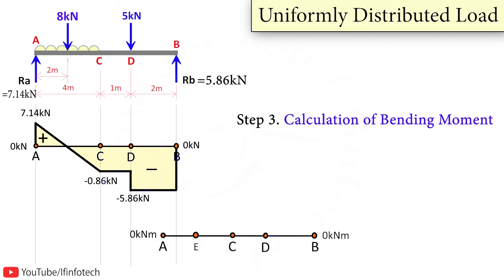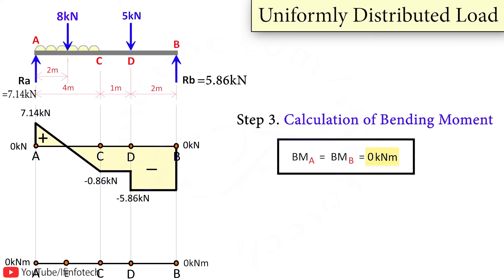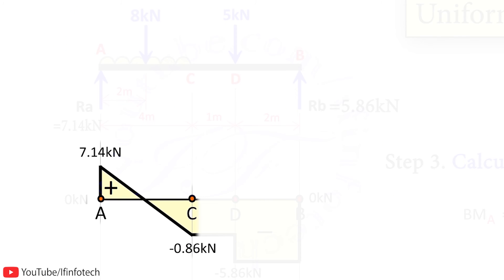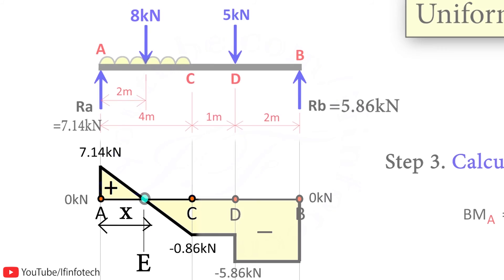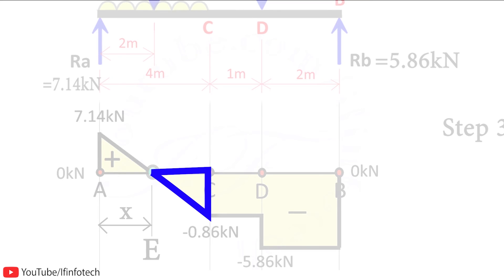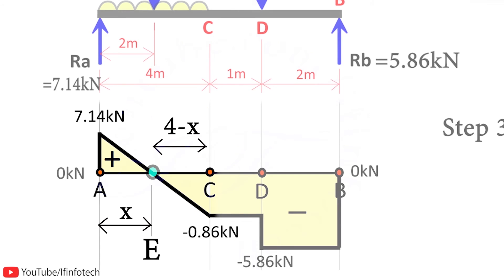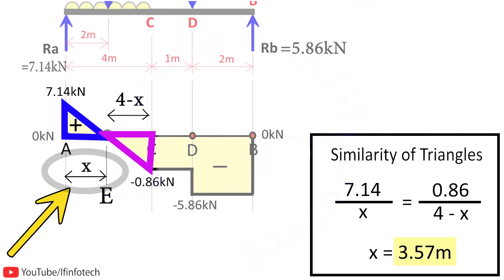The next step is calculation of bending moment. For a simply supported beam, the bending moment at the ends is 0, so bending moment at point A and point B is 0. Where shear force changes from positive to negative, the bending moment is maximum — I represent this point as E. To find the location of point E, distance AC is 4 meters. Using similarity of triangles: height of first triangle is 7.14 with base x, and height of second triangle is 0.86 with base 4 minus x. Solving gives x as 3.57 meters.